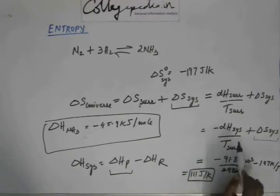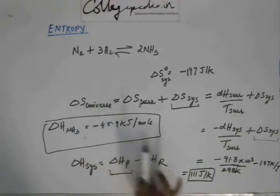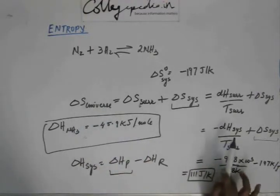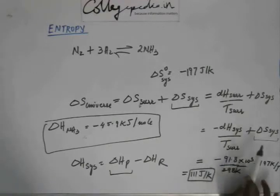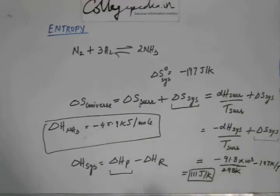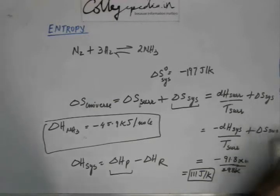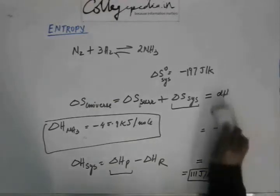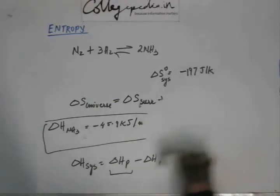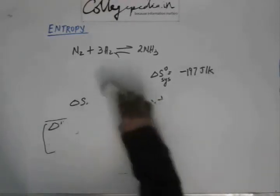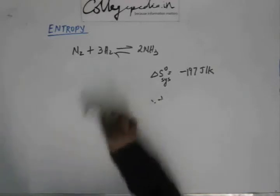You have to know this expression: delta S of universe equals minus delta H of system divided by T of surrounding plus delta S of system. Delta S of universe is the quantity you should look at in order to find out whether a process or a given reaction is spontaneous.